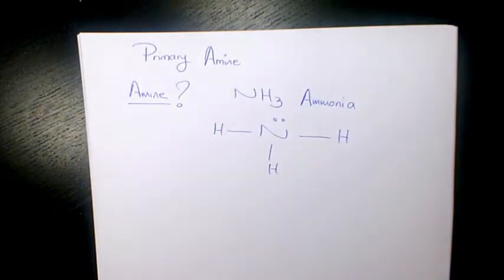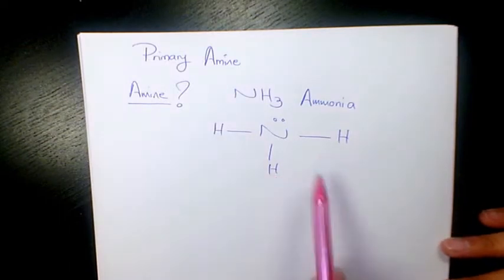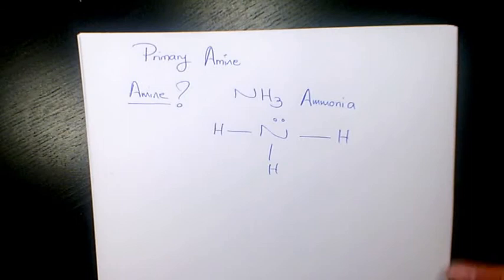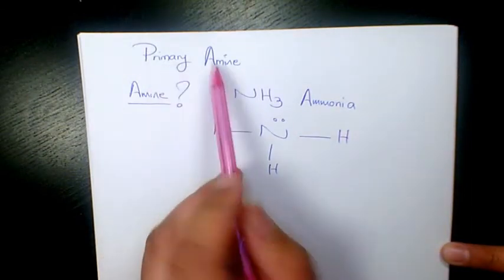Now if one or more than one of these hydrogen is replaced by alkyl or RL group we're gonna have amine which is one of the families in organic chemistry. And which one is primary amine?